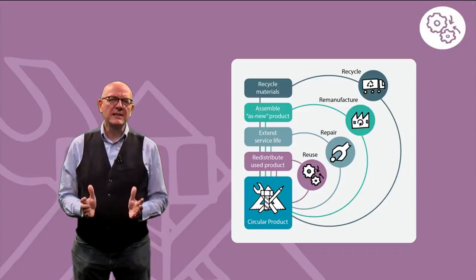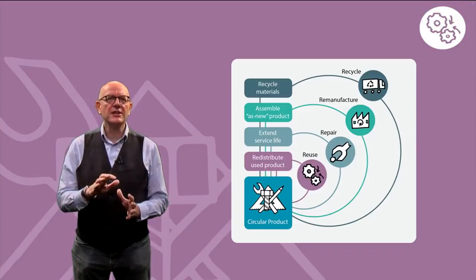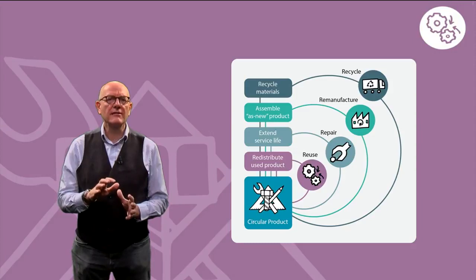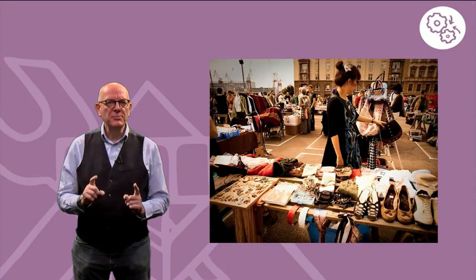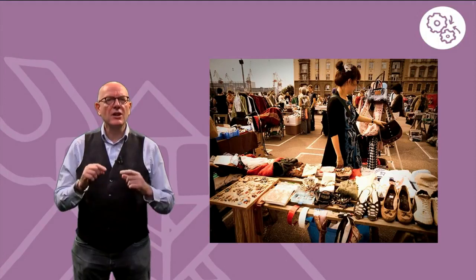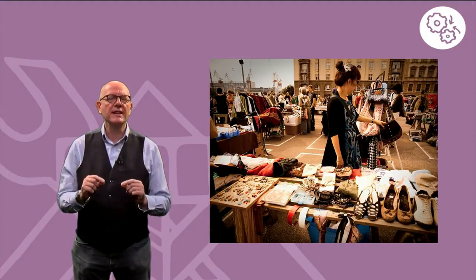As we've already seen, reuse is the first loop in the circular economy diagram. When we reuse products, we take advantage of all the resources and values that were put into their production.